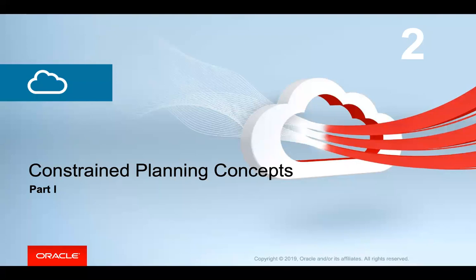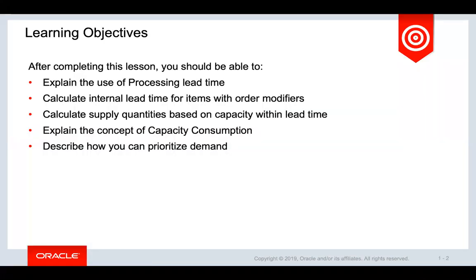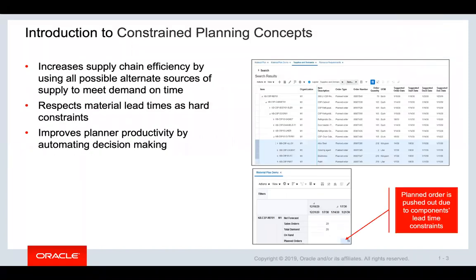Hello, today we are going to discuss the concepts used in constraint planning. It is divided into two parts. In this lesson we will discuss the first part. After completing this lesson, you should be able to explain the use of processing lead time in constraint plans, calculate internal lead time for items with auto modifiers, calculate supply quantities based on capacity within lead time, and explain the concept of capacity consumption.